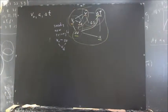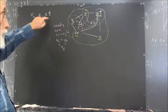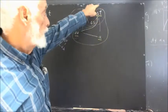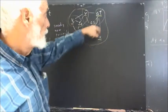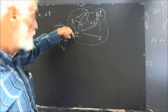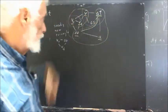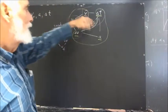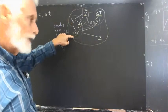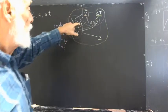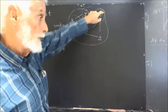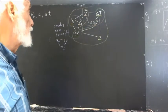Now, previously we considered what happens if we know V naught, A, and delta T. On this triangle we'd circle V naught, A, and delta T in red. Knowing A and delta T, we can find delta V, because we know two of the three quantities related by the definition of average acceleration — that's why they make a triangle.